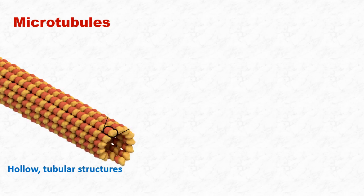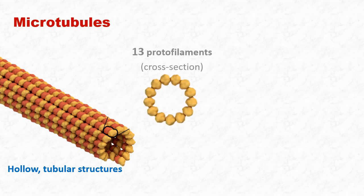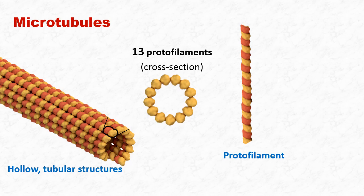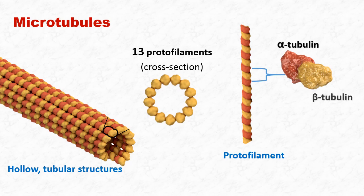Microtubules are hollow, tubular structures that are assembled from the protein tubulin. They are made up of 13 protofilaments. These protofilaments align side by side in a circular pattern to form a single microtubule. Each protofilament is a linear polymer of tubulin dimer. And this dimer is made up of alpha-tubulin and beta-tubulin.